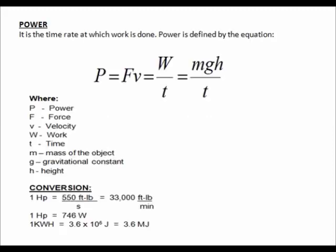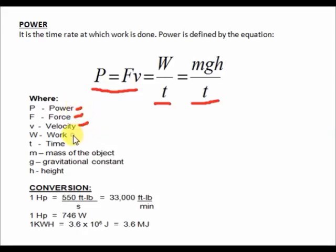Now let us discuss power. Power is the time rate at which work is done. For example, if you are pulling a box at a certain distance in a certain time, you can calculate the power you have exerted in doing that work. Power is defined by the equation: P = F·V, or P = W/T, or P = M·G·H/T, where P is power, F is force, V is velocity, W is work, T is time, M is mass of the object, G is gravitational constant, and H is height.